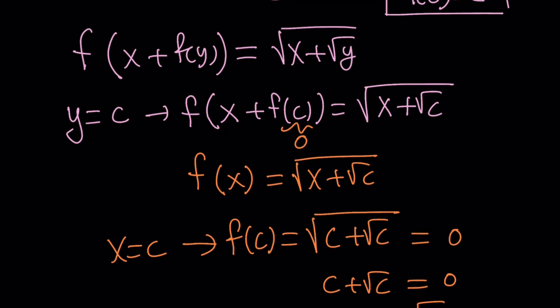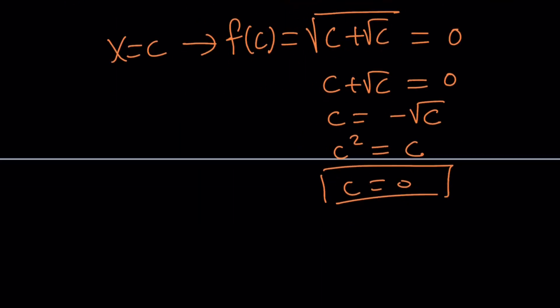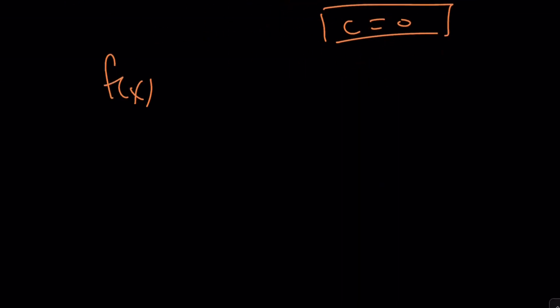In other words, if you go back here, you got f of x as square root of x plus square root of c. But c is 0. Therefore, f of x is just going to be the square root of x. Let's go ahead and talk about the second method real quick. And then I'll show you how I came up with this problem real quick.